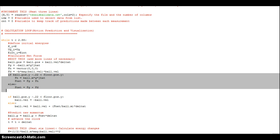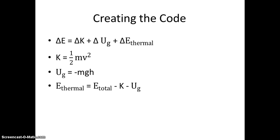The energy of the ball was calculated by using the energy principle, which states in this case that the change in energy of the system equals the change in kinetic, gravitational potential, and thermal energies. The kinetic energy of the ball is based on its velocity, which changes as it bounces, and the gravitational potential energy is based on the height of the ball, which also changes as it bounces. The thermal energy is calculated by subtracting the kinetic and gravitational potential energies from the total energy. These equations to calculate the energies are entered in the while loop so they can be calculated for the whole motion.